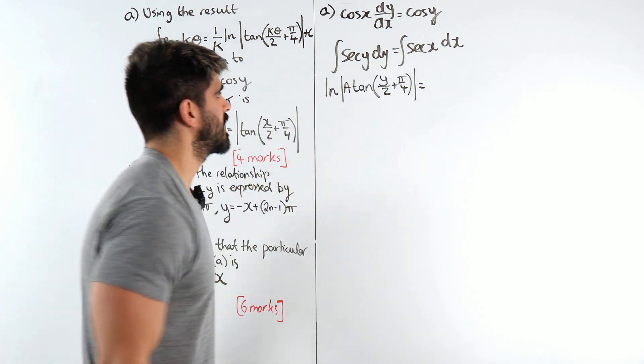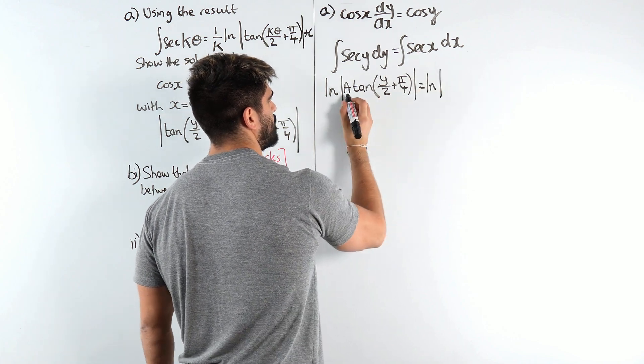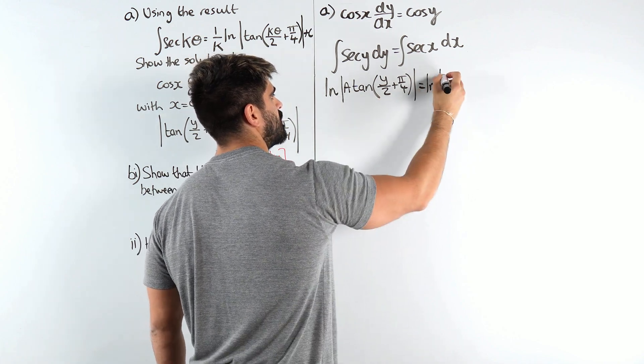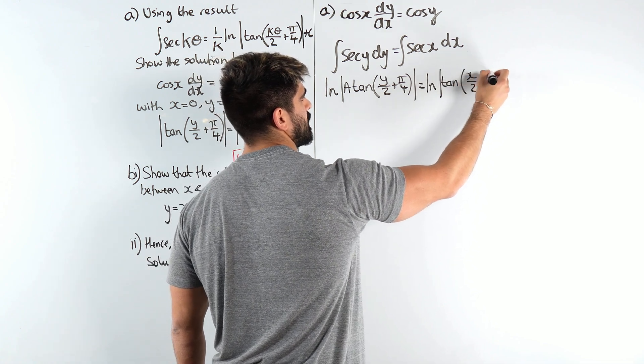Now with sec x is the exact same thing except we don't have any more constant of integration. It's just tan of x over 2 plus pi over 4.